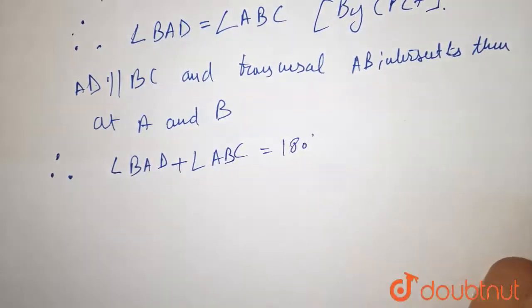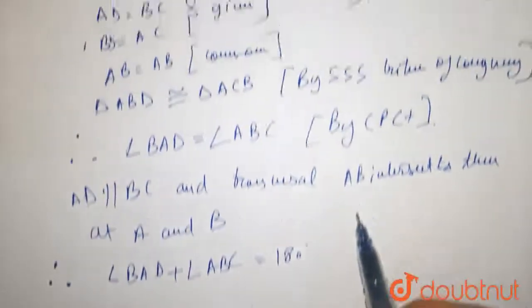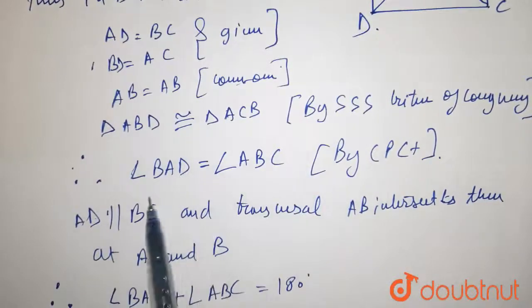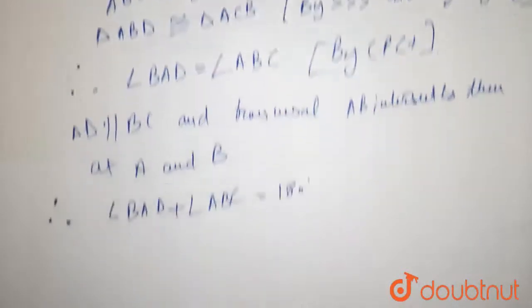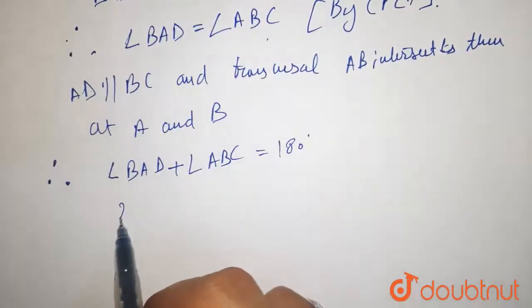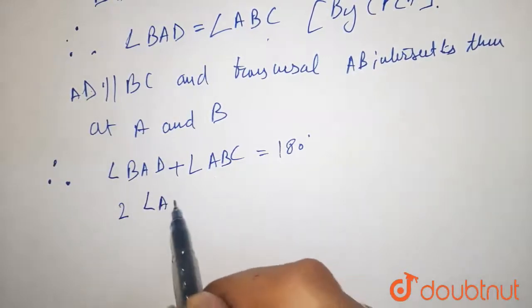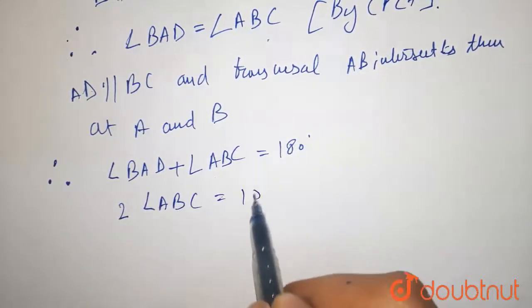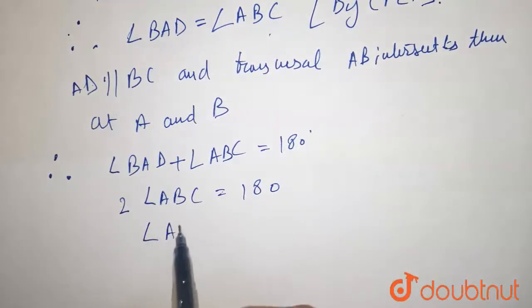So angle BAD plus angle ABC equals 180 degrees, and we know that angle BAD is equal to angle ABC. That means twice angle ABC is equal to 180, so angle ABC is equal to 180 by 2,